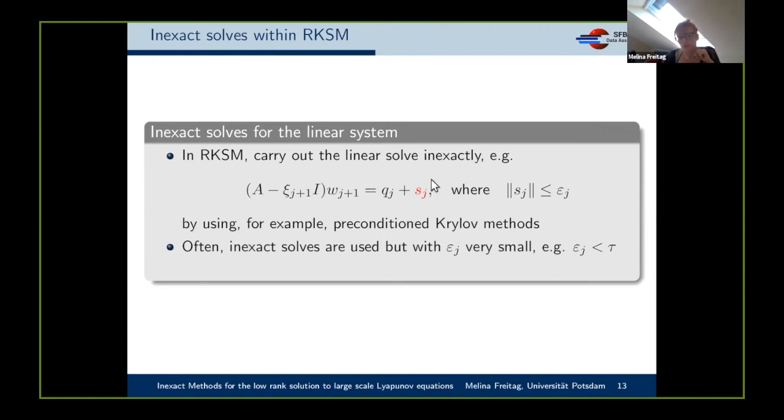Let's look at the inexact solve. Instead of looking at the exact solution of this linear system, I look at the inexact solution and we get a residual. The residual I call s_j, not to confuse it with the Lyapunov residual which is r. The residual is supposed to be smaller than the tolerance epsilon_j. Usually epsilon_j is chosen as the same tolerance as you want to solve the Lyapunov equation to, which is tau. But we want to do better. The question is, can we do better, and the answer is yes.